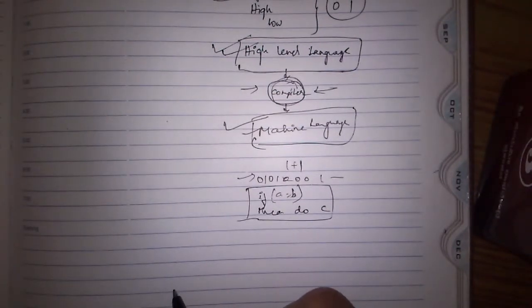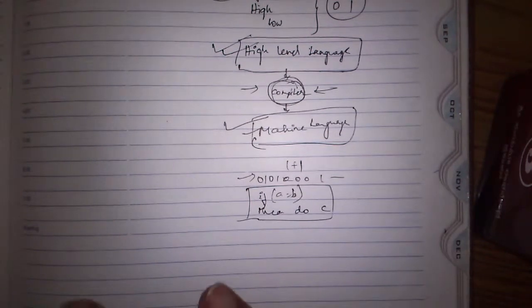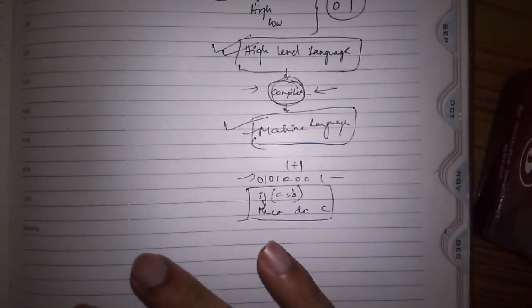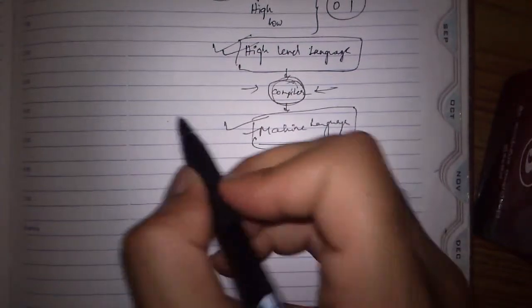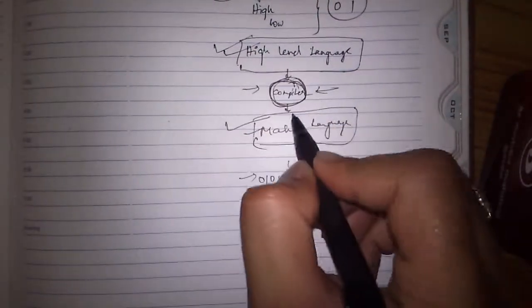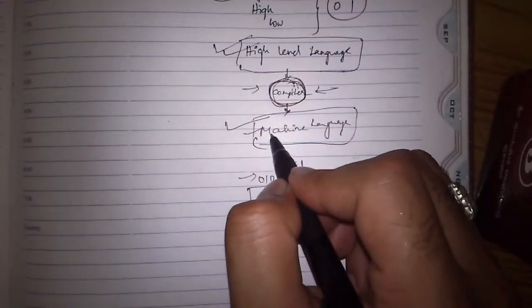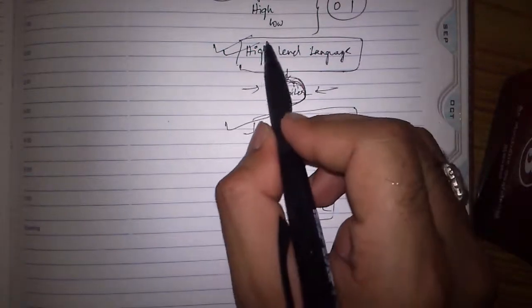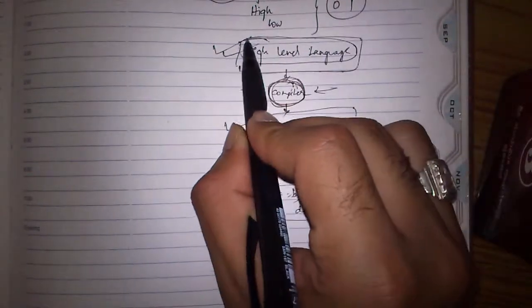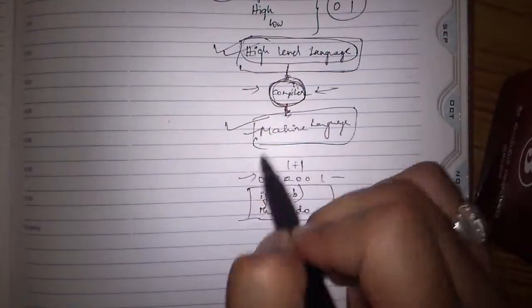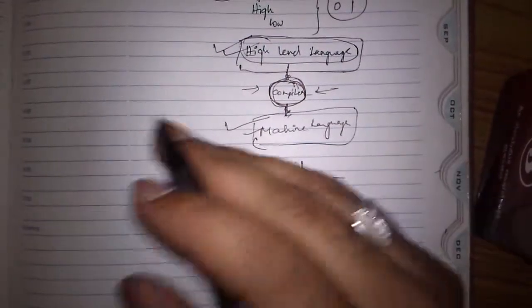The major advantage is that same program can be used in different machines. This compiler which knows the machine language can convert the same high-level language into that particular machine's language. If a programming language is something like that we call it machine independent.